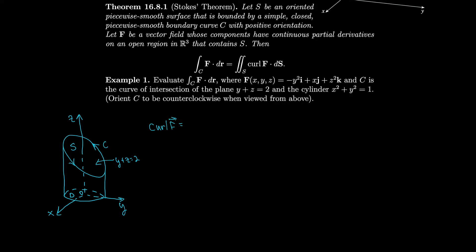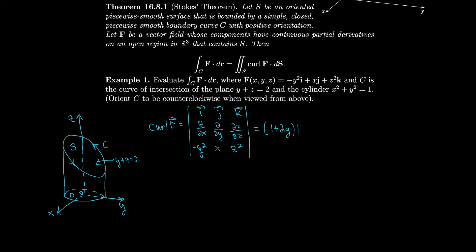We'll compute the curl of F using the determinant with i, j, k, ∂/∂x, ∂/∂y, ∂/∂z, and F = (−y², x, z²). Taking the determinant, the i and j components are both 0 because the relevant partials vanish, and we get curl F = (1 + 2y)k.